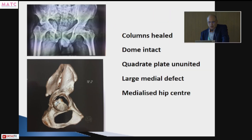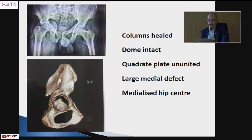From the CT and X-rays, the information gathered in this case: the columns have healed, there is an intact dome, the quadrant plate is probably ununited, there is a large medial defect, and there is a medialized hip center. So we can't put the cup medially — we need to lateralize the hip.